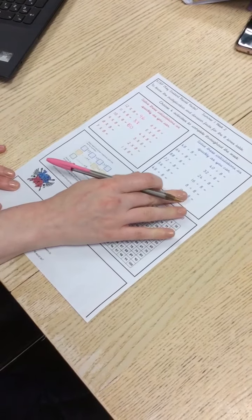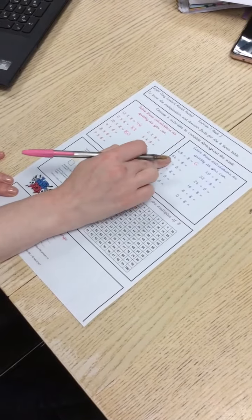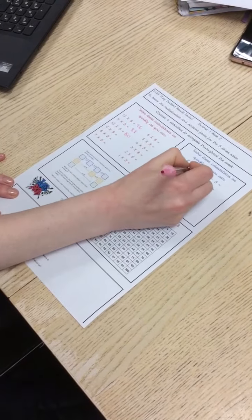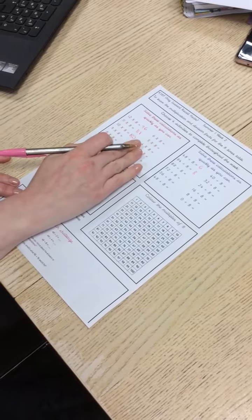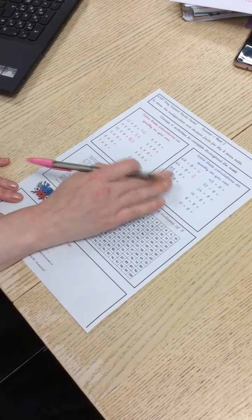Then you've got some division facts as well. 48 divided by 8 equals 6, 64 divided by 8 equals 8, and so on. Use your multiplication facts to help you solve your division facts, just like we would do in class.